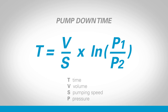The time taken is the volume of the chamber divided by the pumping speed, multiplied by the logarithm of the first pressure divided by the end pressure. Looking at the equation, it's clear that bigger volumes will take a longer time, or bigger pumps will reduce the time required.